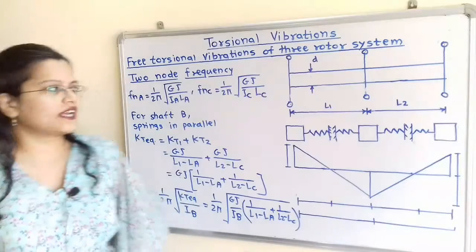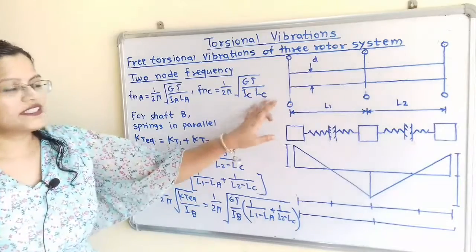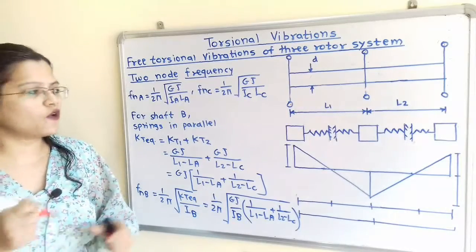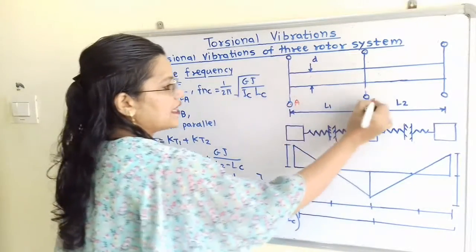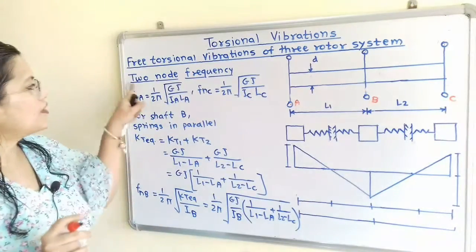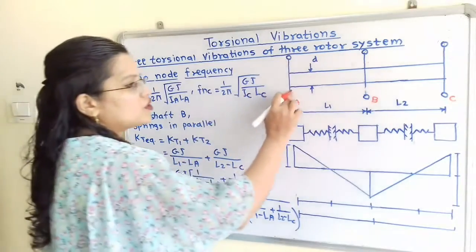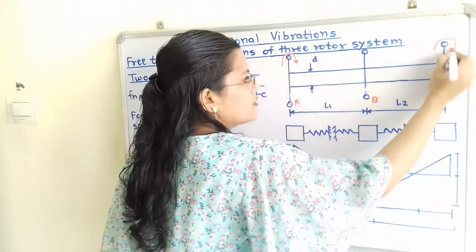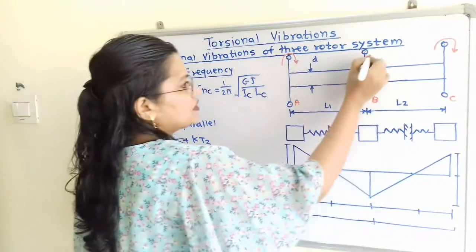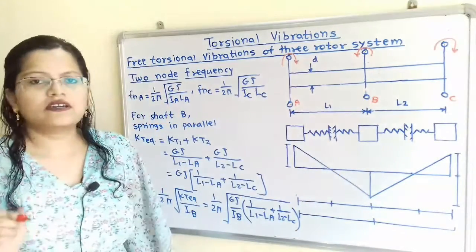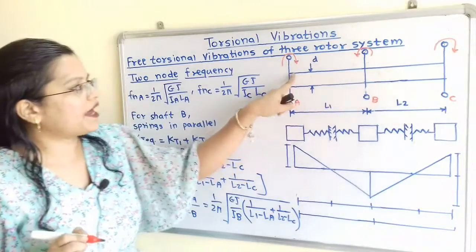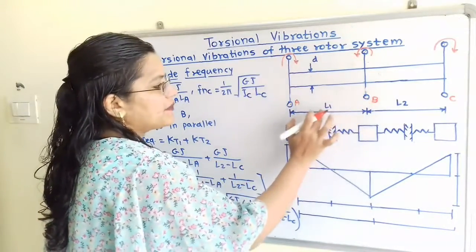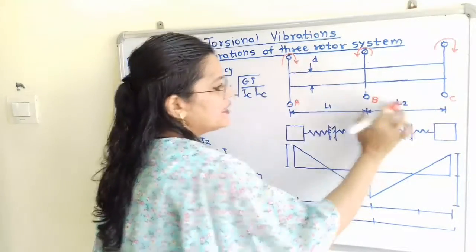Now we will move to the first case: two node frequency. This is the equivalent three rotor system. The first rotor is A, the second rotor is B, and the third rotor is C. According to two node frequency, the first rotor and third rotor rotate in the same direction, while the middle rotor rotates in the opposite direction. The diameter of the shaft is D, the distance between rotor A and B is L1, and the distance between rotor B and C is L2.